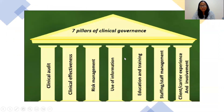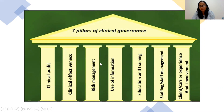Clinical governance is a very important tool for improvement of practice in the healthcare system, and it has seven pillars of clinical governance. The pillars are clinical audit, clinical effectiveness, risk management, use of information, education and training, staffing and staff management, and client and career experience and involvement. Risk management is one of the pillars of clinical governance.